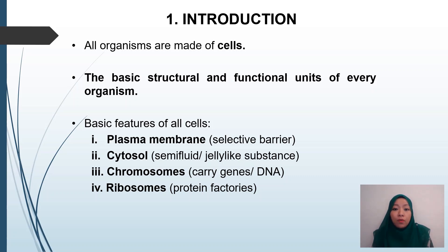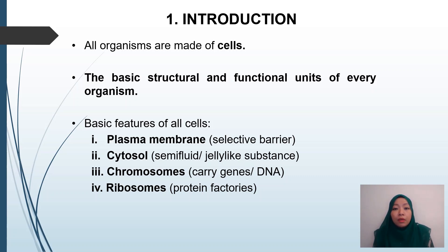These are the basic features of all cells. The first one is the plasma membrane, which acts as a selective barrier for the cell. Then cytosol, which is a semi-fluid, jelly-like substance. Cells also have chromosomes, which carry the DNA or genetic information of the cell. And ribosomes act as the protein factories of the cell.